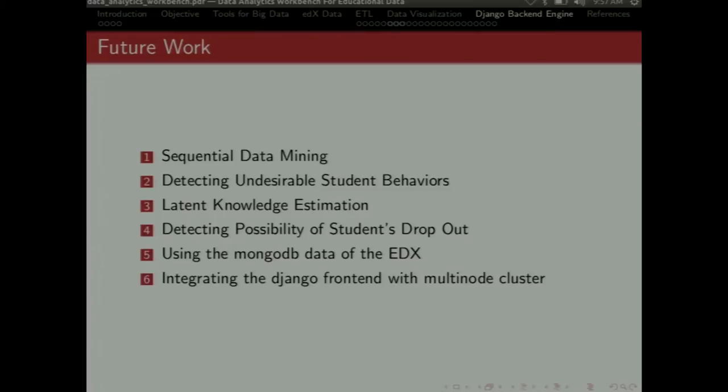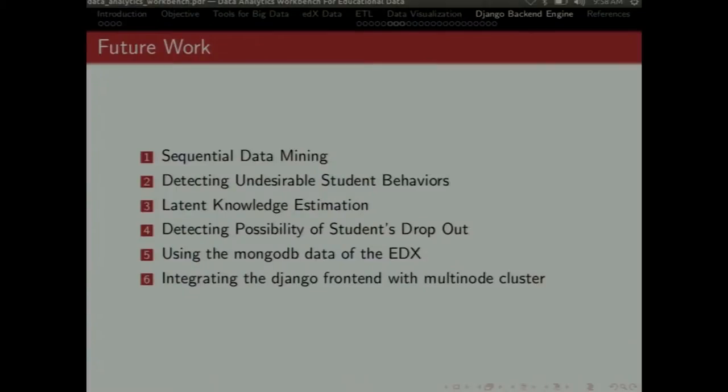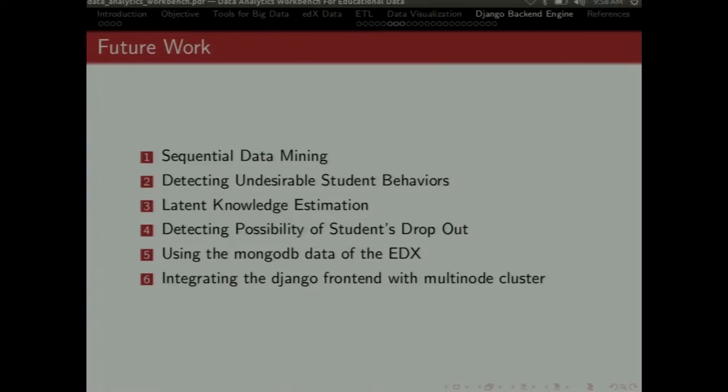These are some of the future works that we have decided. Sequential data mining to find the sequence in which a student learns so that you can predict the student behavior. And detecting undesirable student behaviors. Like if someone is giving answers in a quiz in a very short duration. If he gave all the answers, then there must be some sort of cheating. Or we can decide after predicting about the data. Latent knowledge estimation is about estimating the knowledge pattern of the students. And detecting possibility of student dropouts. Like if some student is watching a video for a very short duration and he's not interested in the course. Then after data analysis part, we can derive such situations.